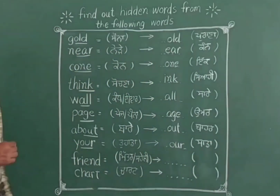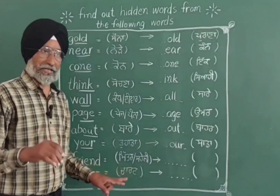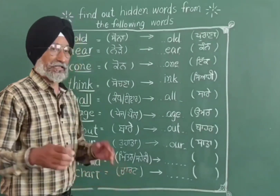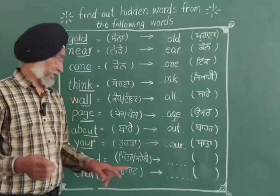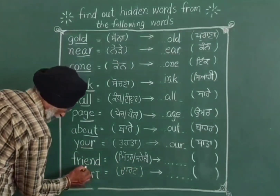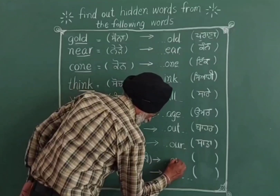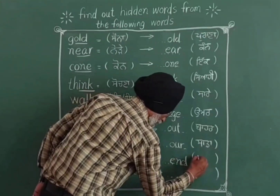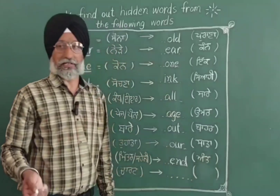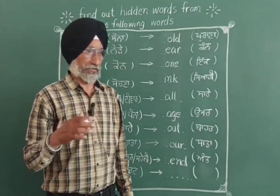Again, FRIEND — friend means if it is a female friend then she is a girlfriend, and if it is a male then he is a friend or 'saheli'. The hidden word inside FRIEND is END. End means 'khatam' (finish), like the end of a film.